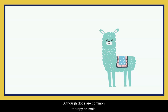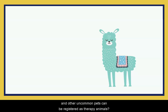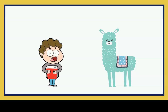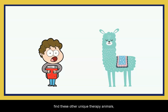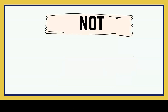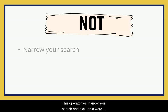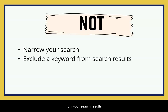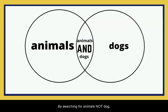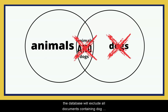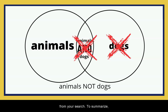Although dogs are common therapy animals, did you know that llamas, rabbits, and other uncommon pets can be registered as therapy animals? If you'd like to exclude DOG from your search in order to find these other unique therapy animals, you could use the NOT operator. This operator will narrow your search and exclude a word from your search results. By searching for animals NOT dog, the database will exclude all documents containing DOG from your search.